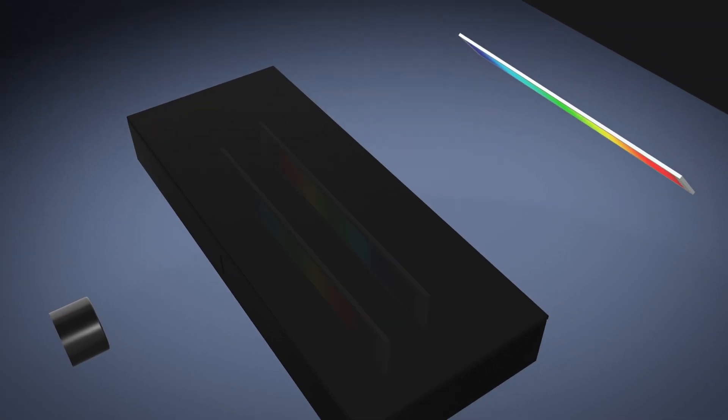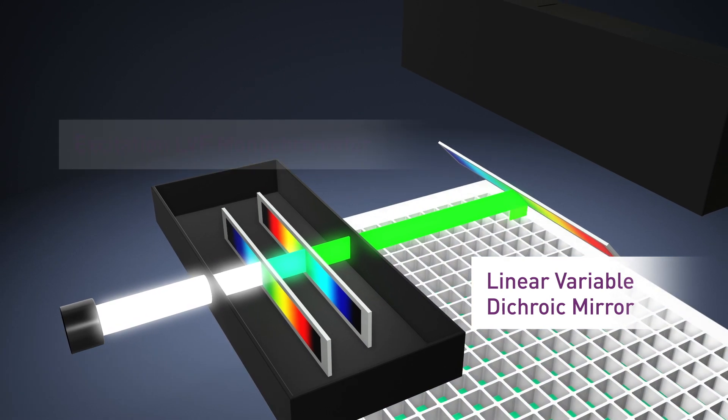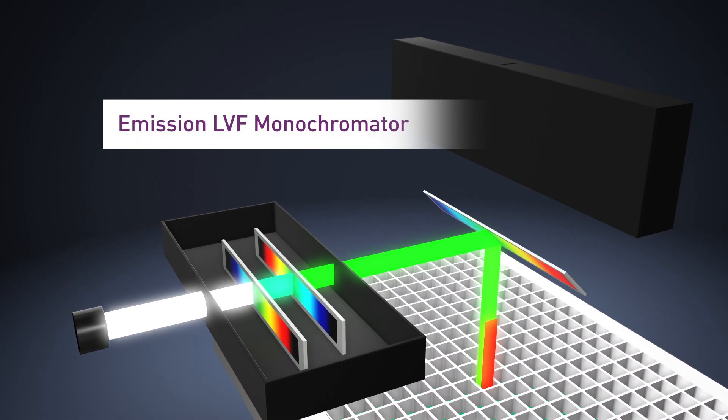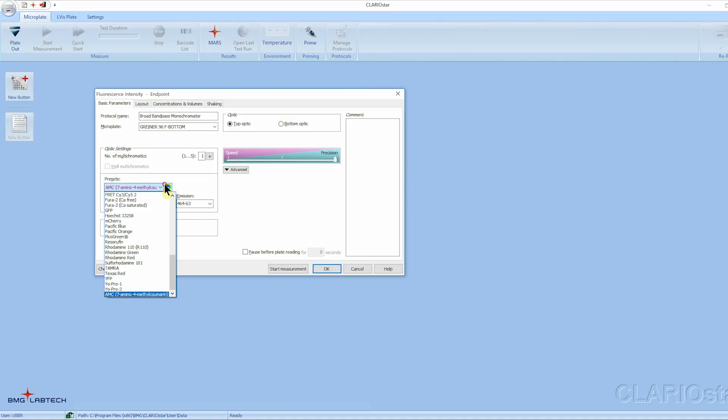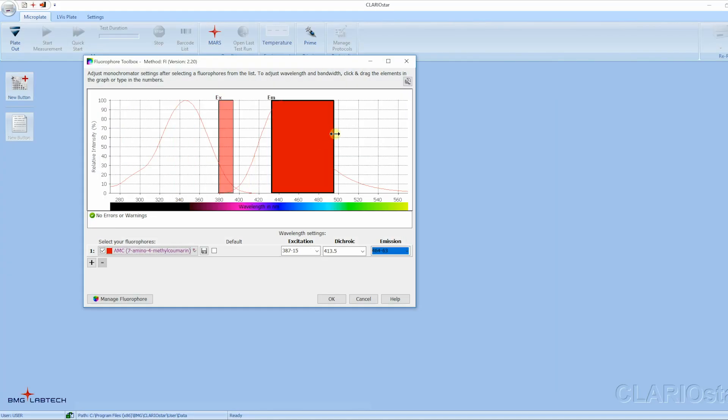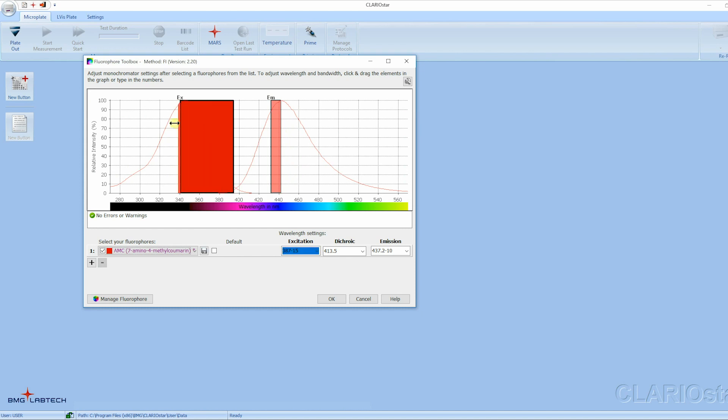The ClarioStar Plus with its patented LVF monochromator and tunable dichroic mirror provides the sensitivity of filters without compromising flexibility. Adjusting the bandpass down to 8 nanometers allows high-resolution spectral scanning, while broadening the bandpass up to 100 nanometers provides increased sensitivity.